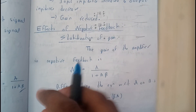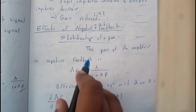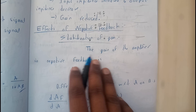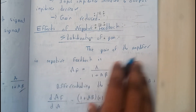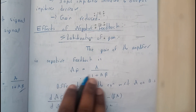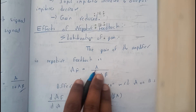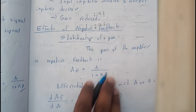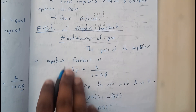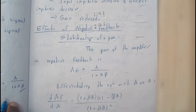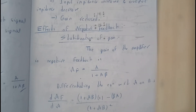There is a small verification method we will be going through. The gain of the amplifier in negative feedback is: af is equal to A divided by 1 plus A·beta. This is the equation we found for negative feedback — I hope everyone remembers this.